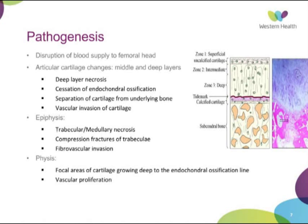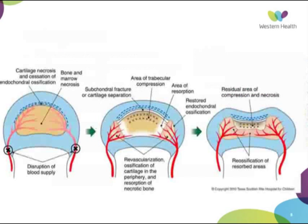Following disruption of blood supply, there are articular changes in the middle and deep layers of articular cartilage, separation of cartilage from the underlying bone, and invasion of vascularity into the cartilage through the epiphysis. This causes an area of central necrosis, subchondral fracture, areas of direct compression, and cartilage separation from underlying bone. You then get revascularization, ossification, resorption, and remodeling, but you end up with deformity of the femoral head.